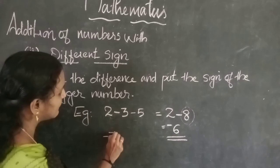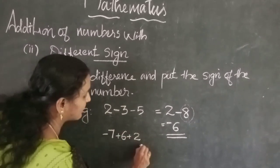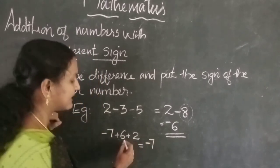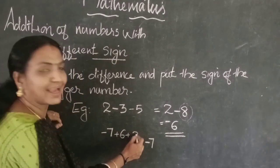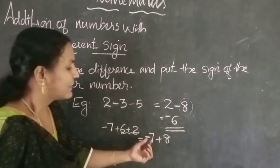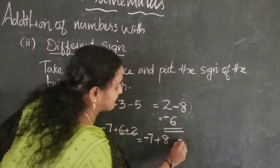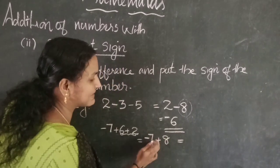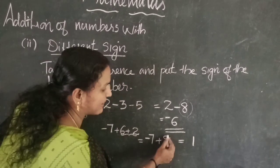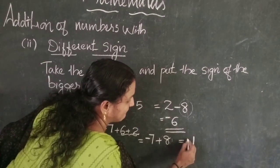One more example: minus 7 plus 6 plus 2. The first number is minus 7. Then 6 and 2 are both positive, so add them: 6 plus 2 is 8. Now we have minus 7 and plus 8 — different signs, so take the difference: 8 minus 7 is 1. The bigger number is 8, its sign is plus, so the answer is plus 1.